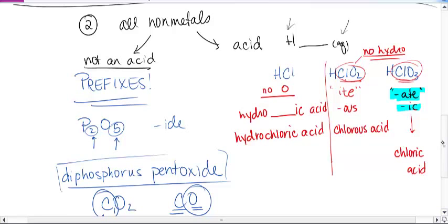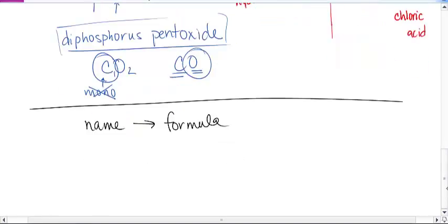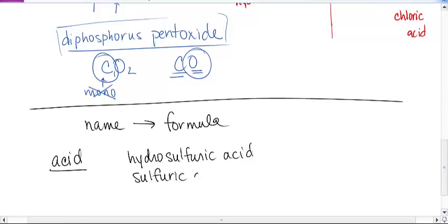Alright, so those are some examples if you have a formula and you need to write the names. Now, if you have the name and you have to write the formula, we have to consider those same things. I'm going to go in my reverse order here. So if you have an acid, you recognize it because you have something like hydrosulfuric acid versus sulfuric acid or sulfurous acid.